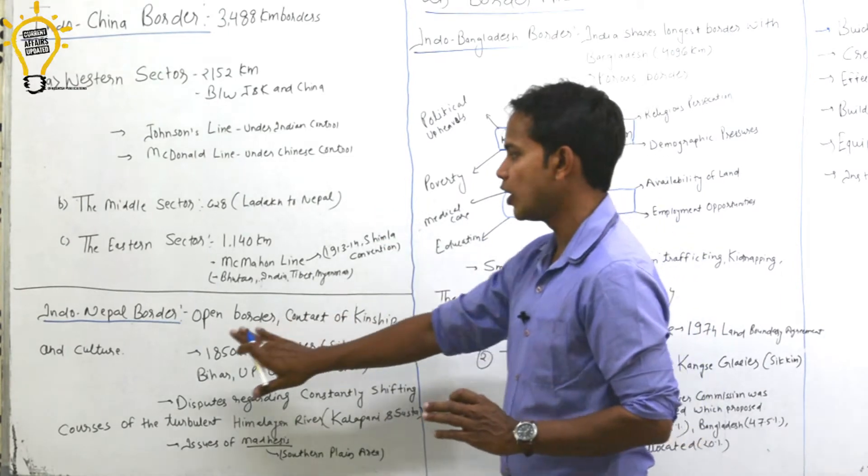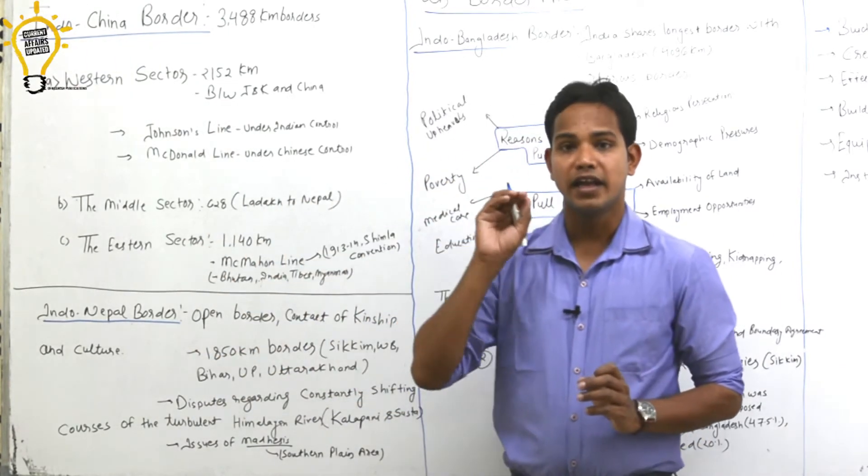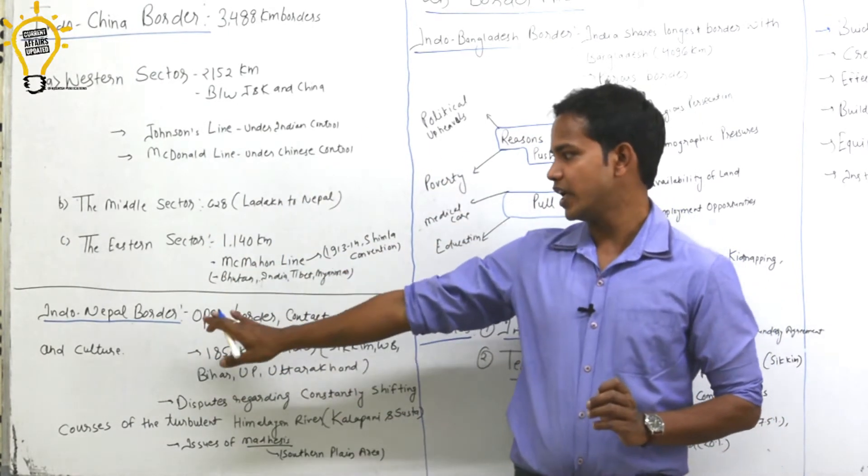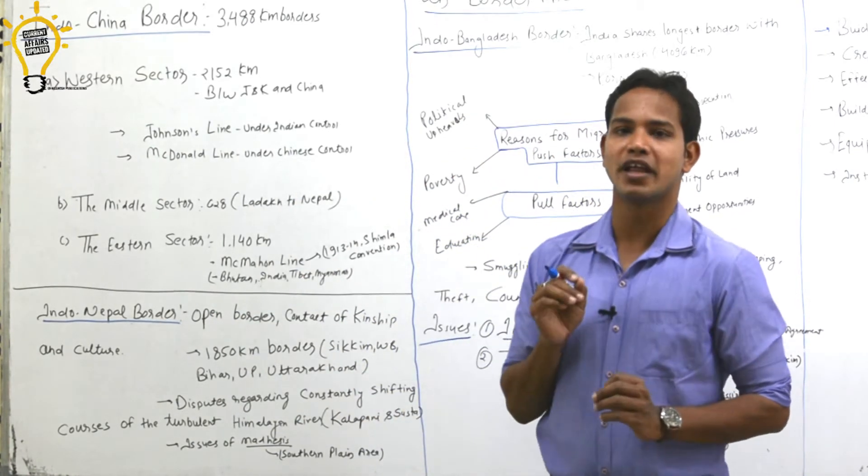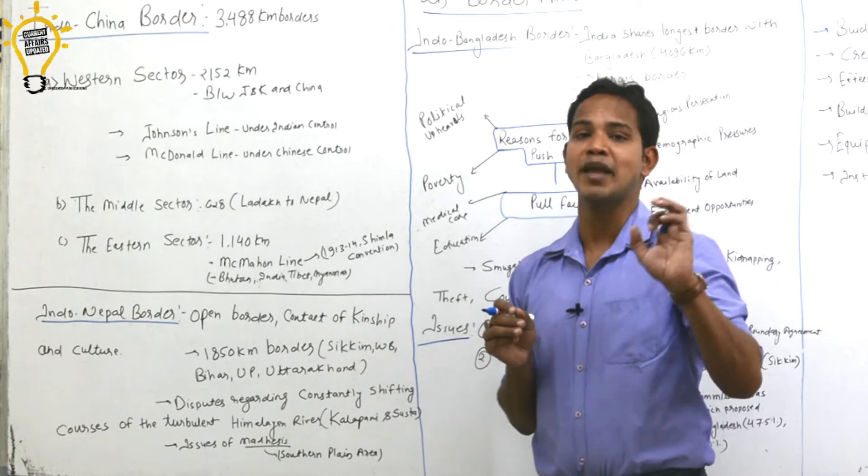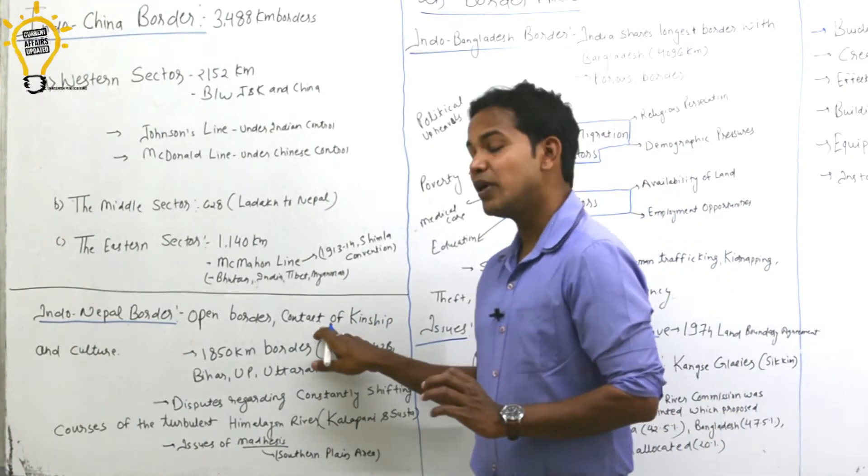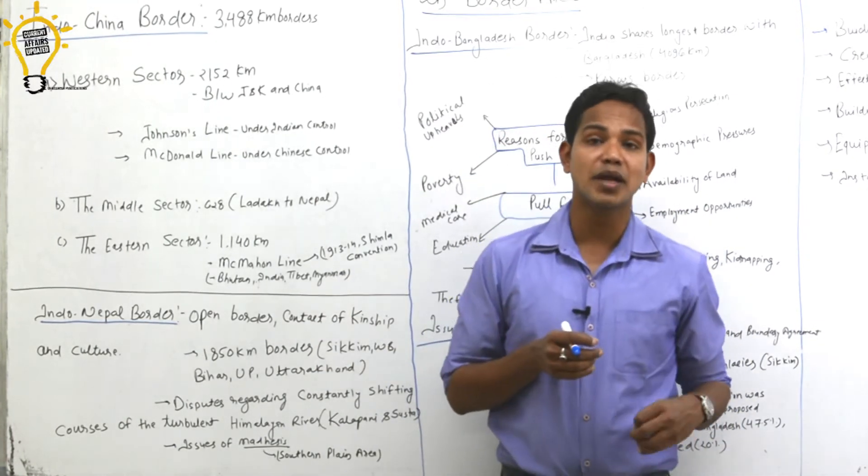In your syllabus you need to understand what is McMahon Line and what is Line of Actual Control. Let's go to Indo-Nepal border. Important border. Now, next one is Indo-Nepal border. Indo-Nepal border is an open border. Our relationship has been going on from historical times. We have people to people contact, even kinship contact.